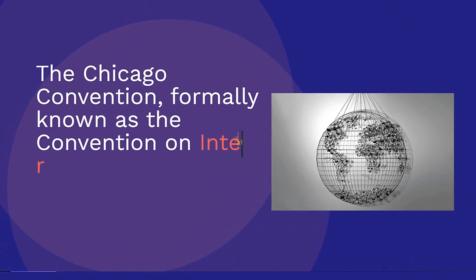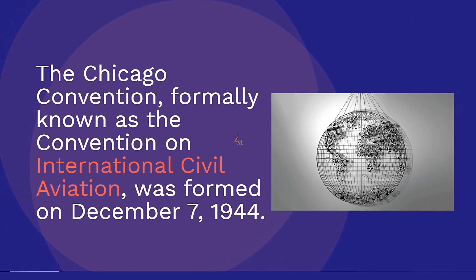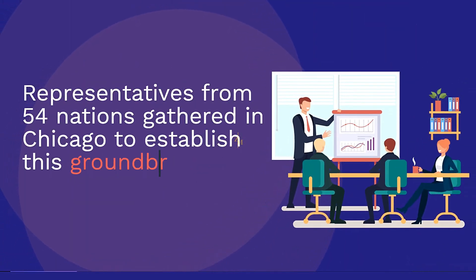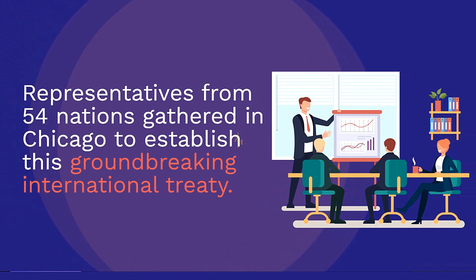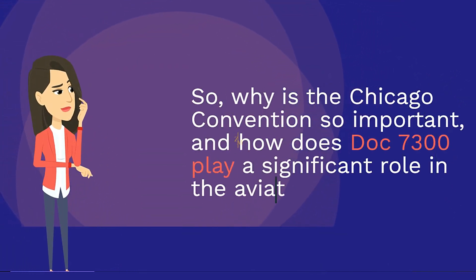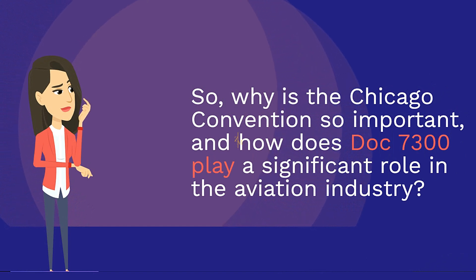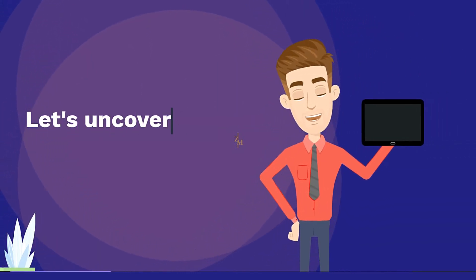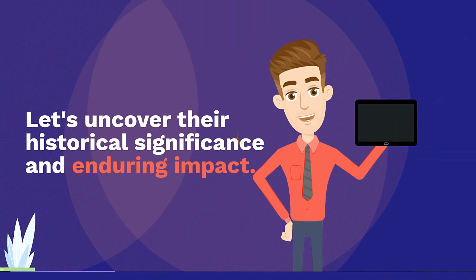The Chicago Convention, formerly known as the Convention on International Civil Aviation, was formed on 7 December 1944. Representatives from 54 nations gathered in Chicago to establish this groundbreaking international treaty. Why is the Chicago Convention so important, and how does DOC 7300 play a significant role in the aviation industry? Let's uncover their historical significance and enduring impact.